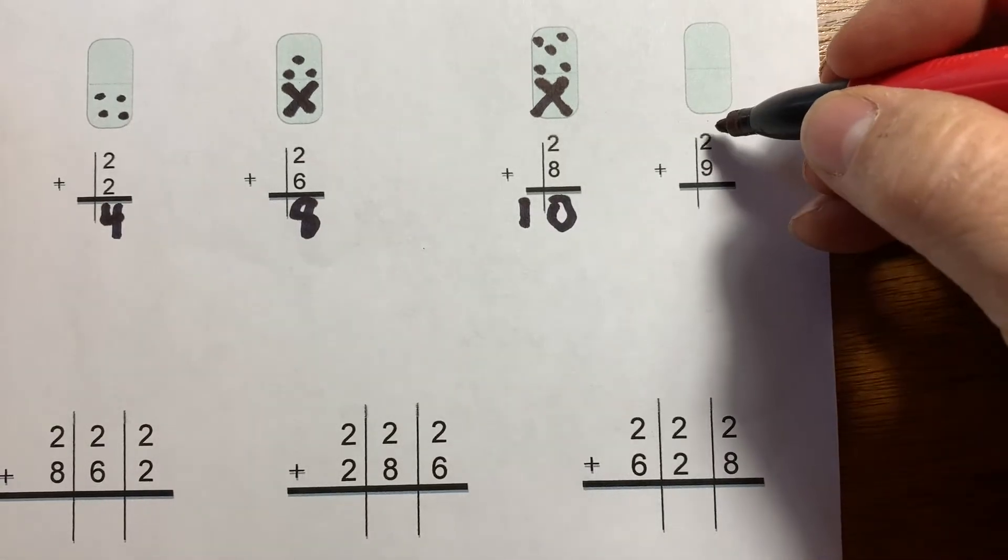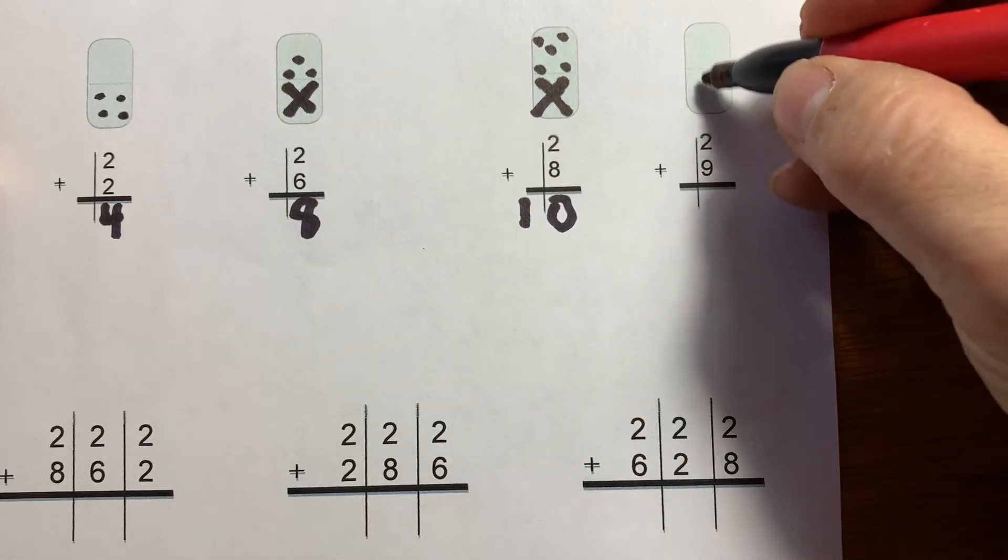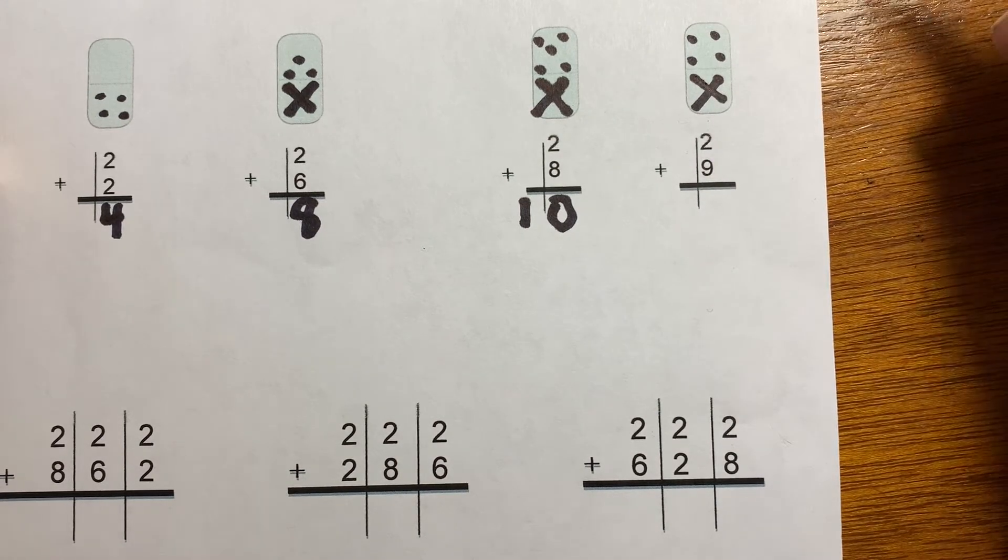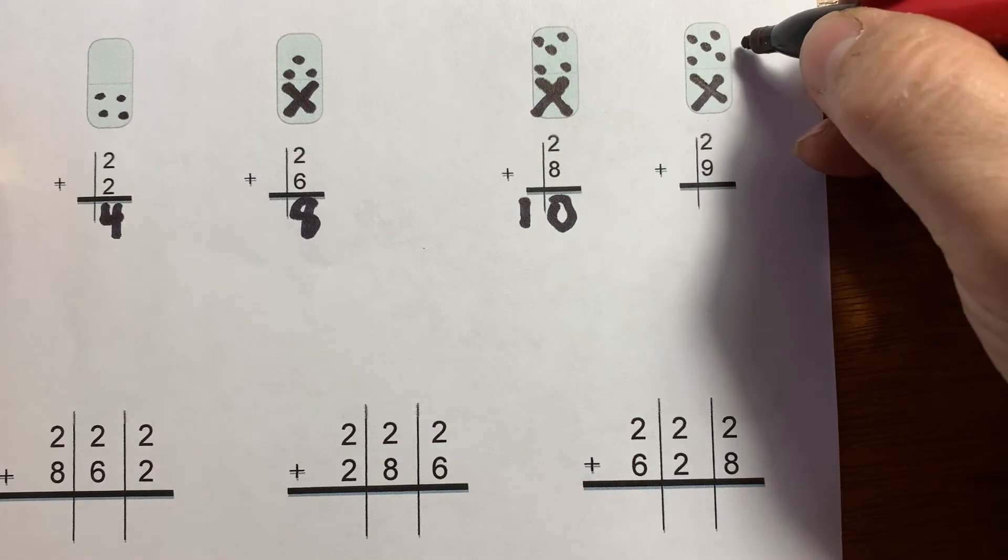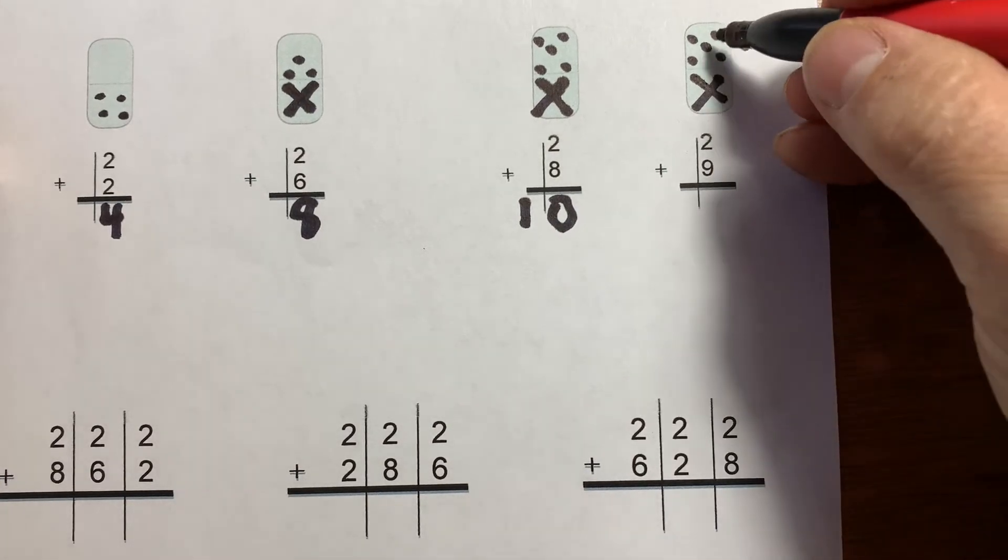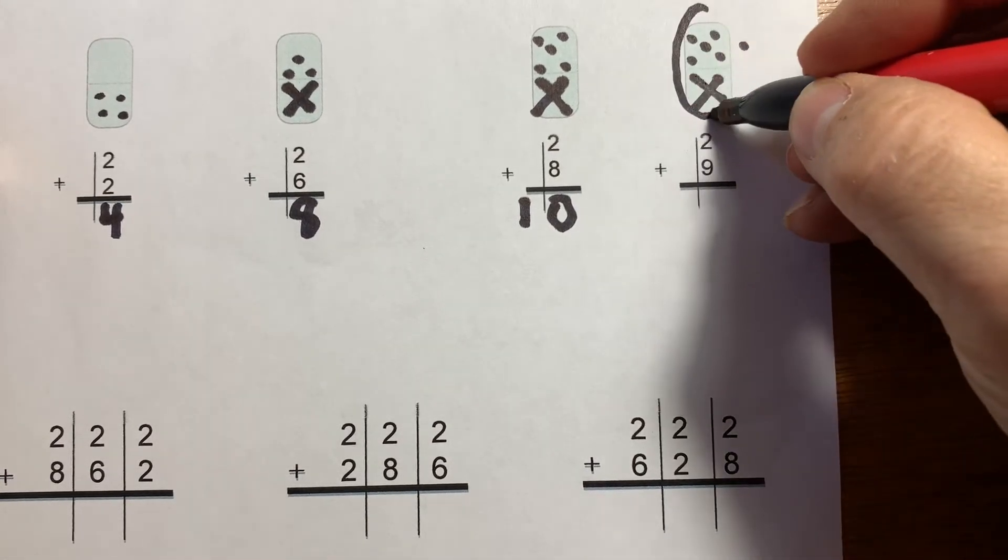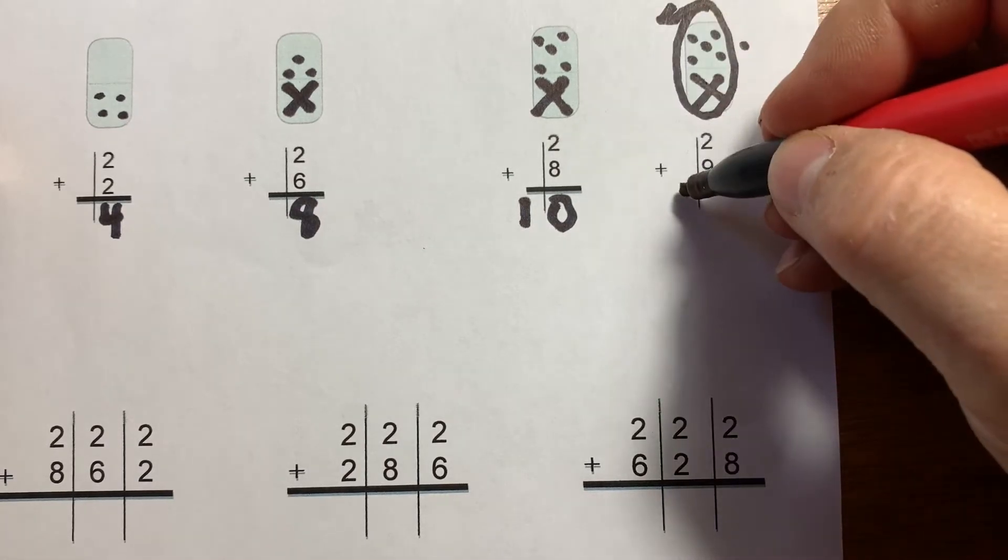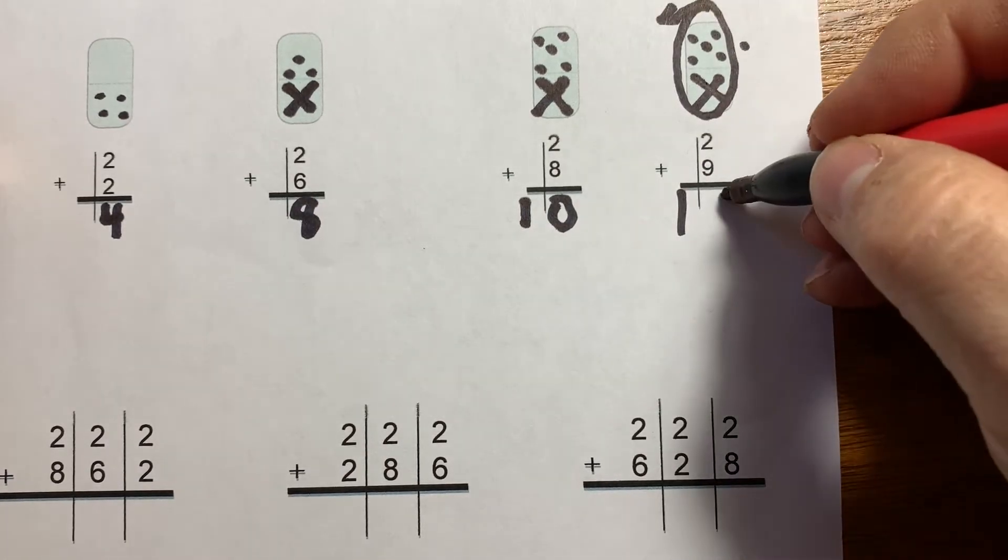Nine plus two. There's nine. I'm going to add two. I'll complete the ten and one more. For one ten, one ten and one one.